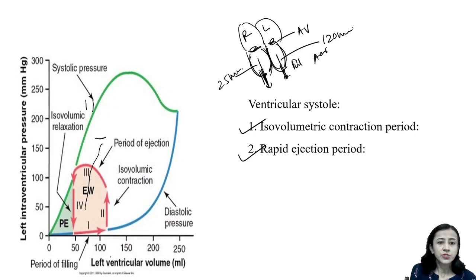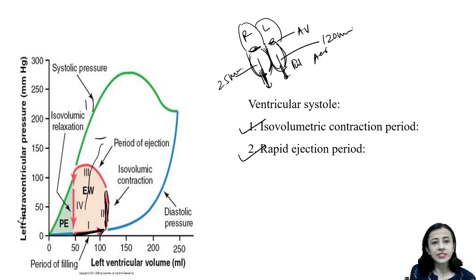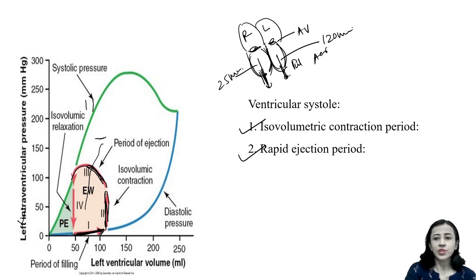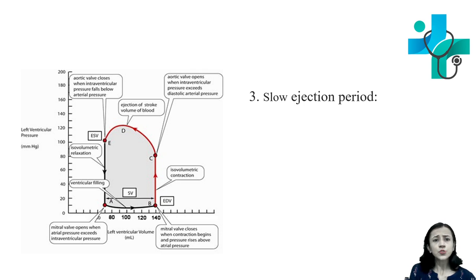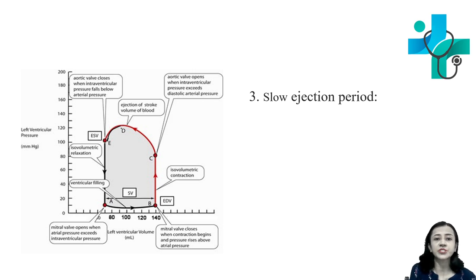This diagram shows the pressure changes. During atrial systole there is increase in ventricular pressure, then during isovolumetric contraction period there is a rapid rise. During the ejection phase, initially during rapid ejection there is an increase in pressure, but during the slow ejection phase there is a decrease — pressure falls. During the slow ejection period, there is no further ventricular contraction and therefore intraventricular pressure starts falling.